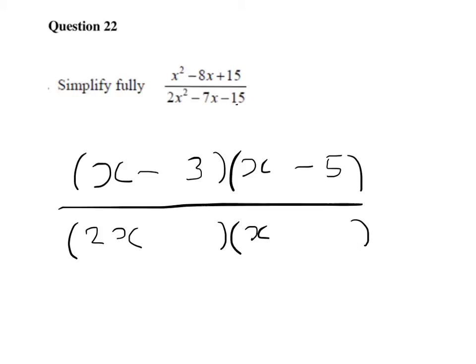So I'm going to write down the factors of 15 to start with. So I've got 1 and 15, 3 and 5. And we've got to experiment with this really, until we end up with a minus 7x in the middle.